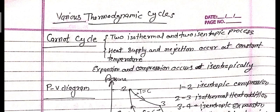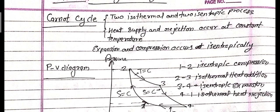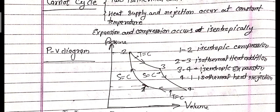First, the Carnot cycle. In the Carnot cycle, two isothermal and two isentropic processes occur. Heat supply and rejection occur at constant temperature, and expansion and compression occur isentropically, as shown in the PV diagram. Process 1 to 2: isentropic compression. Process 2 to 3: isothermal heat addition. Process 3 to 4: isentropic expansion.